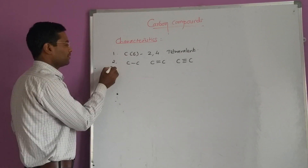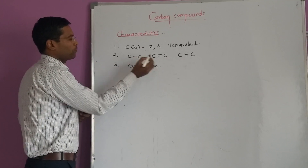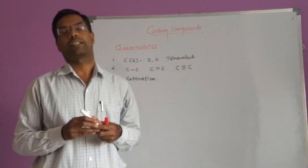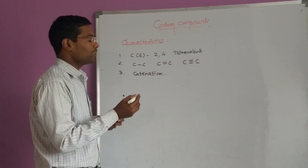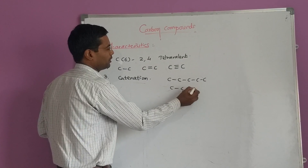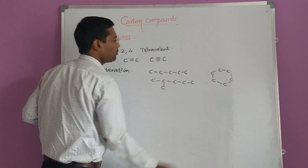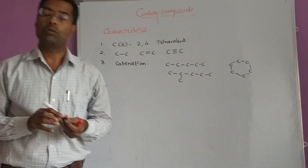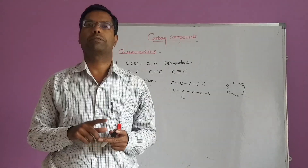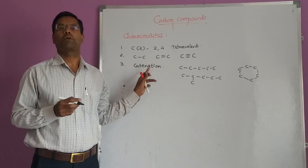The third important characteristic of carbon is that carbon has the property of catenation. The property of direct bonding between atoms of the same element to form a long chain is called catenation. Due to catenation, carbon can form straight chains, branched chains, as well as rings or cycles of carbon atoms. No other element has such a strong property of catenation as carbon.